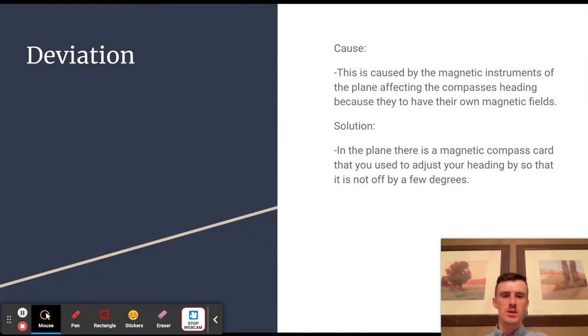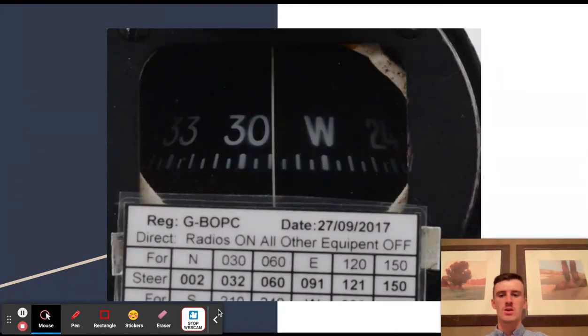In the plane, there's a magnetic compass card that you should use to adjust your heading so it does not get off by a few degrees. This is our card here. You can see for north we're going to steer 002 instead of 000. That's because of certain instruments in the cockpit.